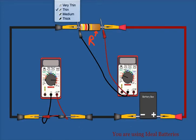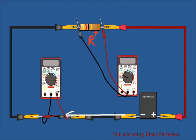We then look at the current going through the circuit and we see that there is about 213 milliamps. Remember, current is measuring how much charge is flowing through the circuit per second. And we want to see how this current changes as we adjust different properties of our circuit.